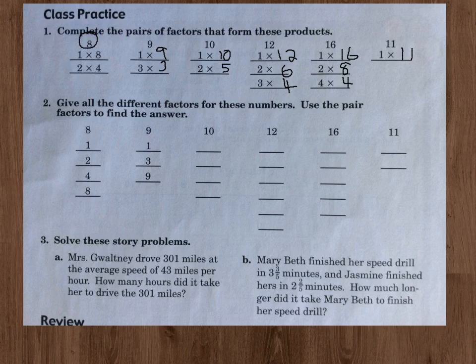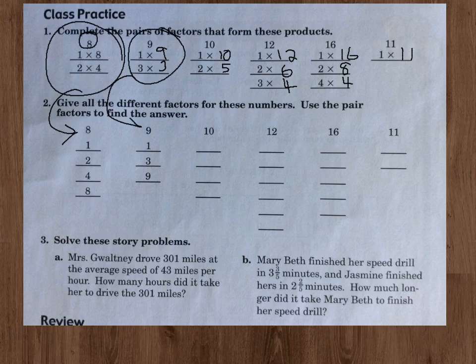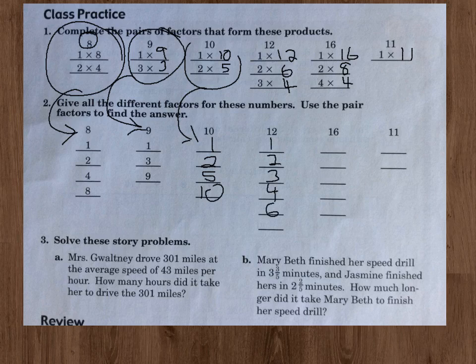So what they've done in number 2 is they're asking you for the factors for each of the numbers. It's 8 again and 9 again is there. So 10, we can look up there and go down, and it's 1, 2, 5, 10. Make sure you have them in the correct order, numerical order they call that. 12 would be 1, 2, 3, 4, 6, and 12. 16 would be 1, 2, 4, 8, 16. 11 is just 1 and 11.